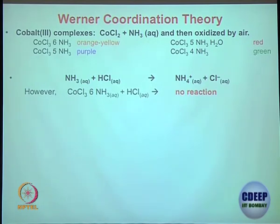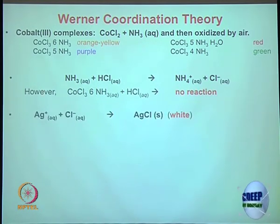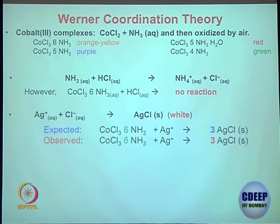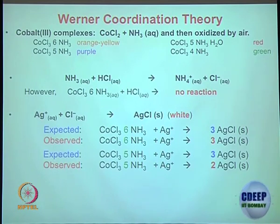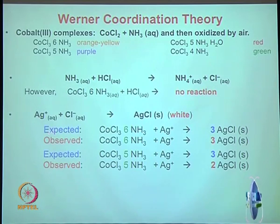It is not just ammonia gas sitting in the complex — something has happened. Now, what they tried to do next used a known reaction: silver added to a chloride solution gives silver chloride white precipitate. They took the first compound, the orange-yellow one, and tried adding silver. You can quantify how much silver chloride is formed — they found three equivalents of silver chloride, so all three chlorides are accessible for Ag⁺. Then they did the same experiment with the purple one and found only two equivalents of silver chloride, although three chlorides are there.